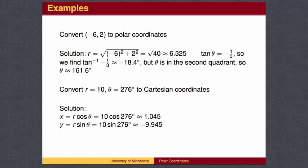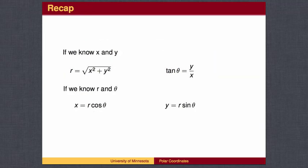The conversion from polar coordinates to rectangular coordinates is straightforward. To recap, to convert from Cartesian coordinates to polar coordinates, find the length by the Pythagorean Theorem and the angle using inverse tangent. To convert from polar coordinates to rectangular coordinates, x is r times the cosine of theta, and y is r times the sine of theta.